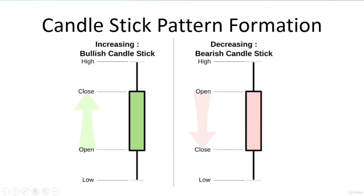On the right-hand side, the red candle is shown. It shows that close is less than the open price, meaning it is negative for that timeframe. We also call it a bearish candlestick. The thin lines above or below the real body are called shadows.